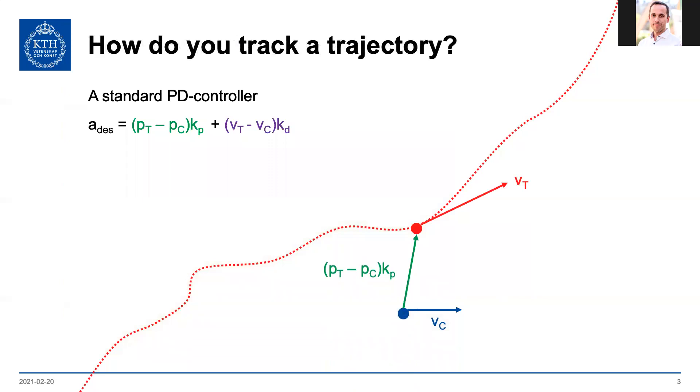So you measure the position error and multiply that by some kp, and then you measure the velocity error in purple here and multiply it by another coefficient kd. And then you add this and that is your desired acceleration, and then you apply this acceleration to the blue dot.